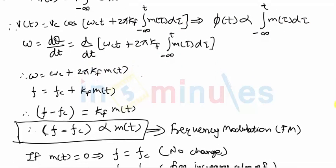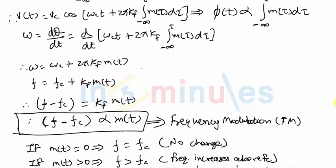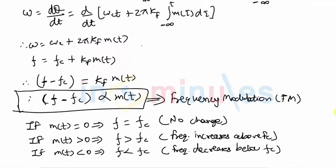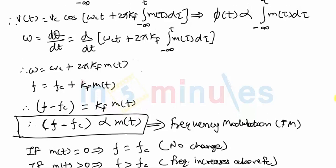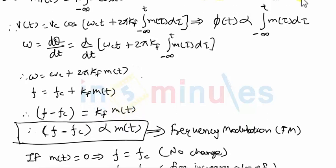And the second conclusion we make is that there are two ways in which I can generate an FM signal. The first is by changing frequency with respect to modulating signal amplitude directly, and the second way is by changing phase in proportion to the integration of the modulating signal.